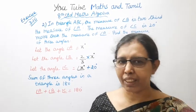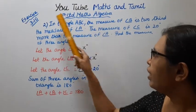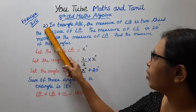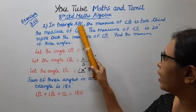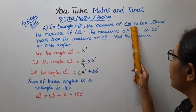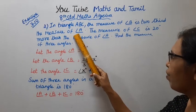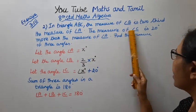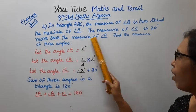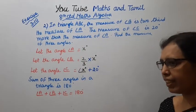Hello students, welcome to Max and Taman channel. 8th standard Max Algebra, exercise 3.10 second sum. In triangle ABC, the measure of angle B is 2/3 of the measure of angle A. The measure of angle C is 20 more than the measure of angle A. Find the measure of the 3 angles.